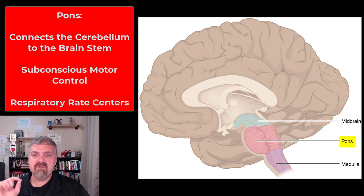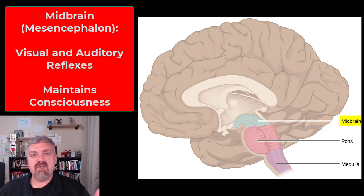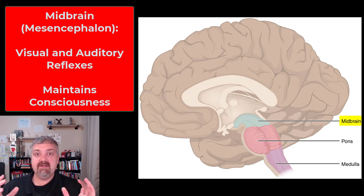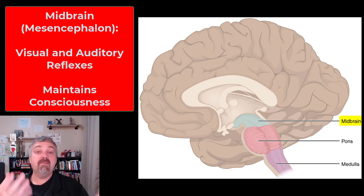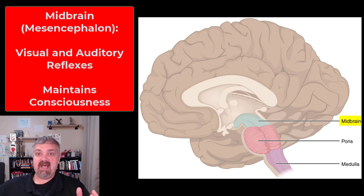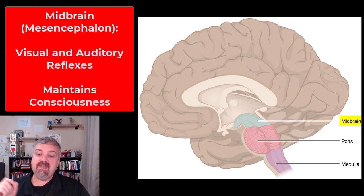Think: pons — connection to the cerebellum, respiratory rate centers. Then we have the midbrain, or mesencephalon, which means midbrain. The two key things here are visual and auditory reflexes. We don't see and hear in this area, but if we hear something we turn towards it, or if we see something moving we track it — because these basic survival instincts that would have helped us find food or not become food are there in the midbrain. So if I'm teaching and somebody walks by the window, I have to look. These are visual and auditory reflexes at the level of the midbrain.